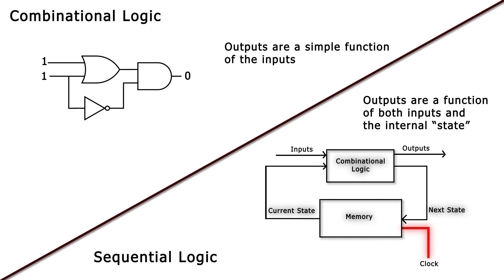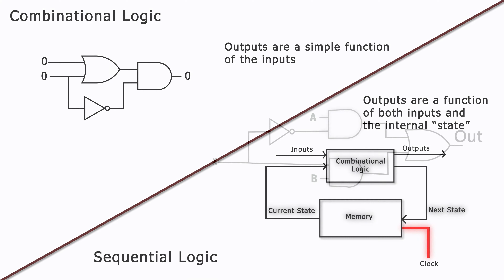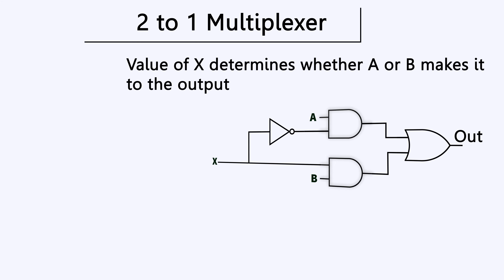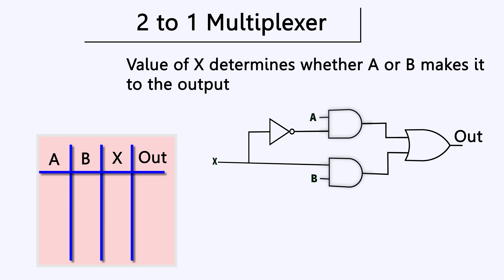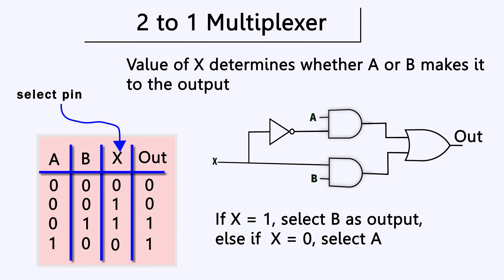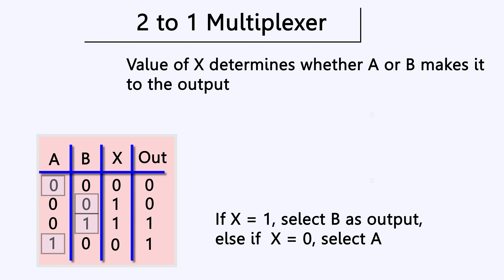The easiest place to start with Verilog is combinational logic. A good starting point is the two-to-one multiplexer. This is a combinational circuit which selects an output based on the value of a select pin — in this case X. If X is zero we select A, if X is one we select B, and as a combinational circuit the output changes as soon as one of the inputs changes, almost instantaneously.